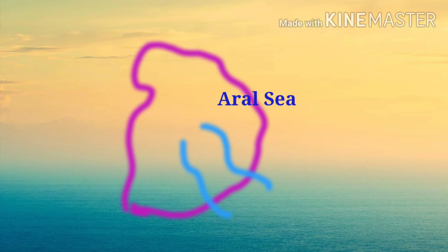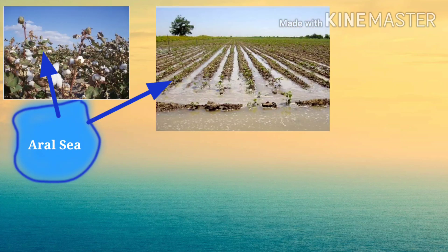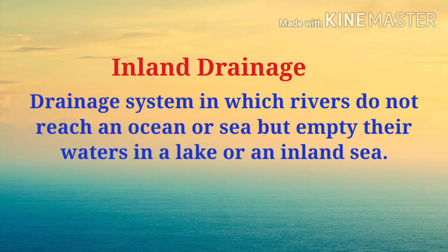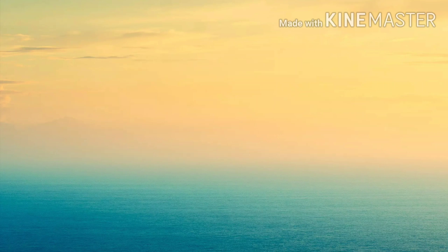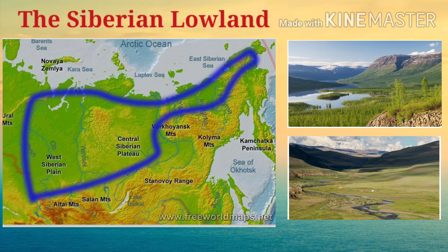Aral Sea is actually a huge lake located between Kazakhstan and Uzbekistan in central Asia. Much of the water which used to flow into the Aral Sea has been used for dramatically raising crops, and as a result, the Aral Sea has shrunk. Inland drainage refers to drainage in which rivers do not reach an ocean or sea, but empty their waters into a lake or an inland sea. The third one is the Siberian Lowland or Siberian Plain. It has been formed through gradual erosion of the ancient highland, and hence there are a few eroded hills in this lowland.